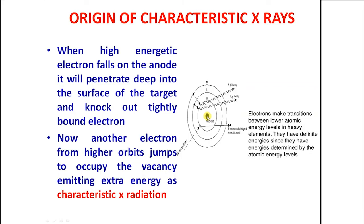You see that this is the nucleus. Nucleus is surrounded by different orbital electrons which are confined to K shell, L shell, etcetera. Now during the production of primary x-rays or normal x-rays in the tube, when high energetic electron falls on the anode, it will penetrate deep into the surface of the target and knocks out tightly bound electron. Just see, this is the K electron actually.